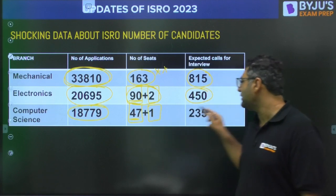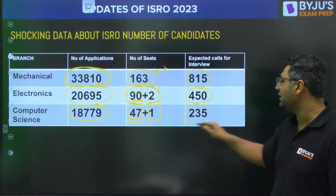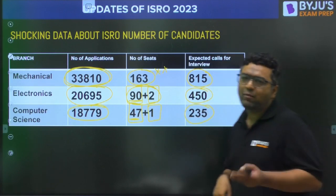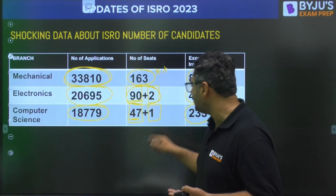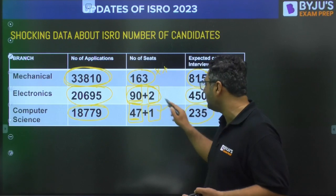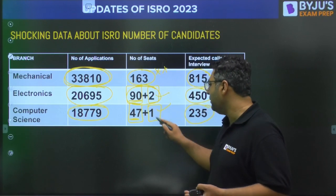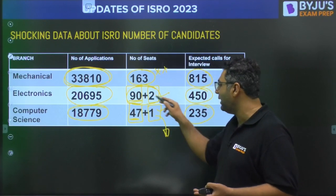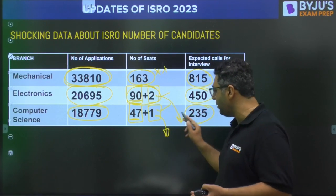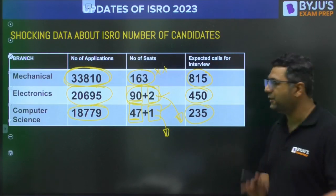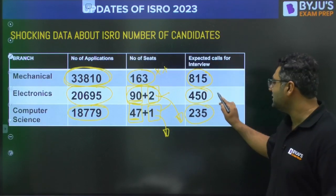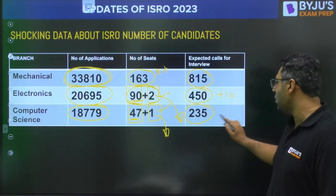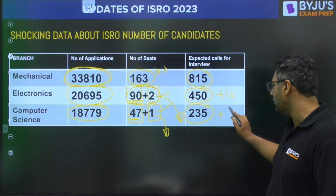For the 47 Computer Science seats, 235 should be the expected number. Now regarding the autonomous body seats — if counted separately, maybe 10 candidates will be called for each. Otherwise, that minimum of 10 will be added to the respective main category totals.